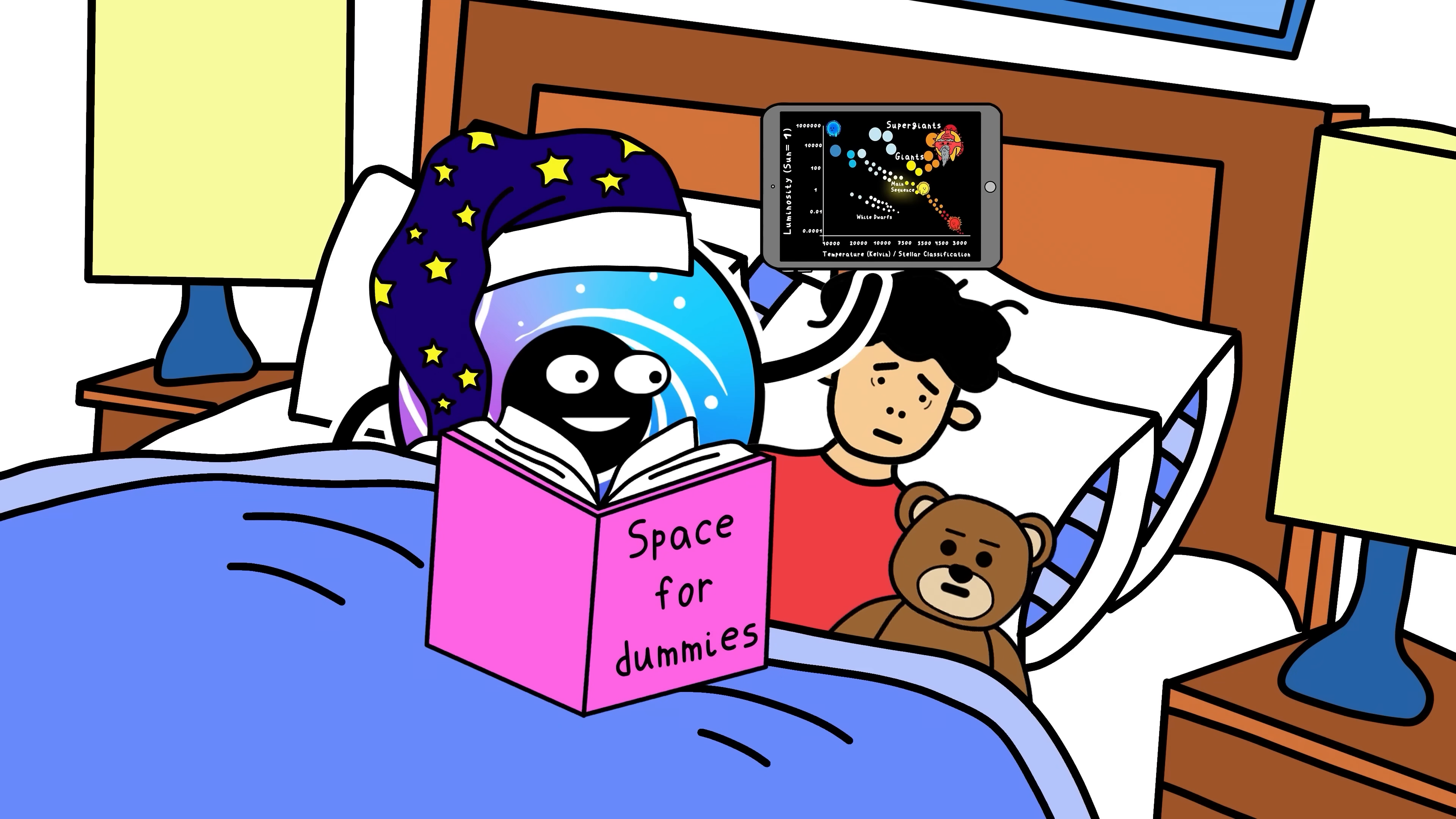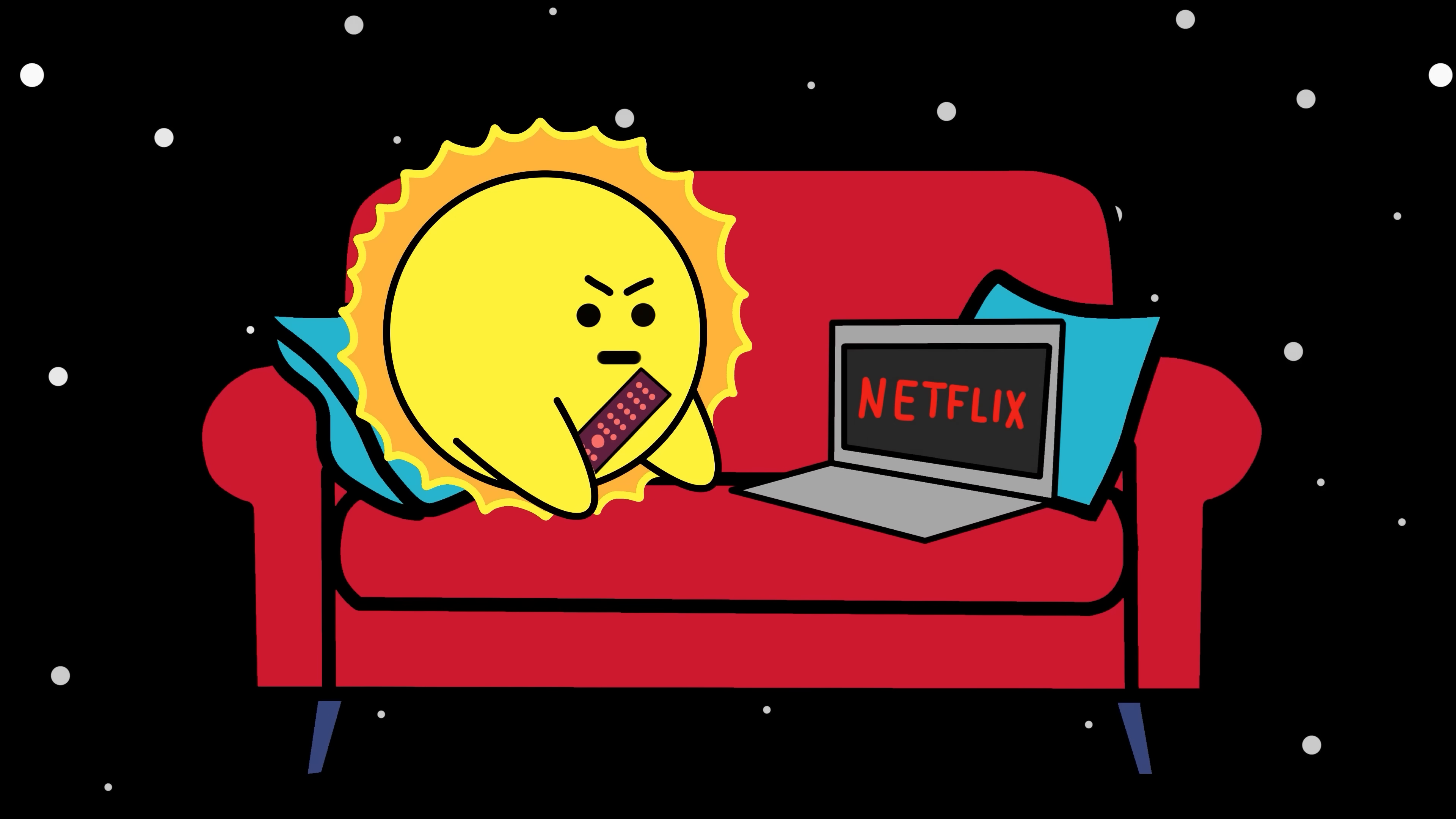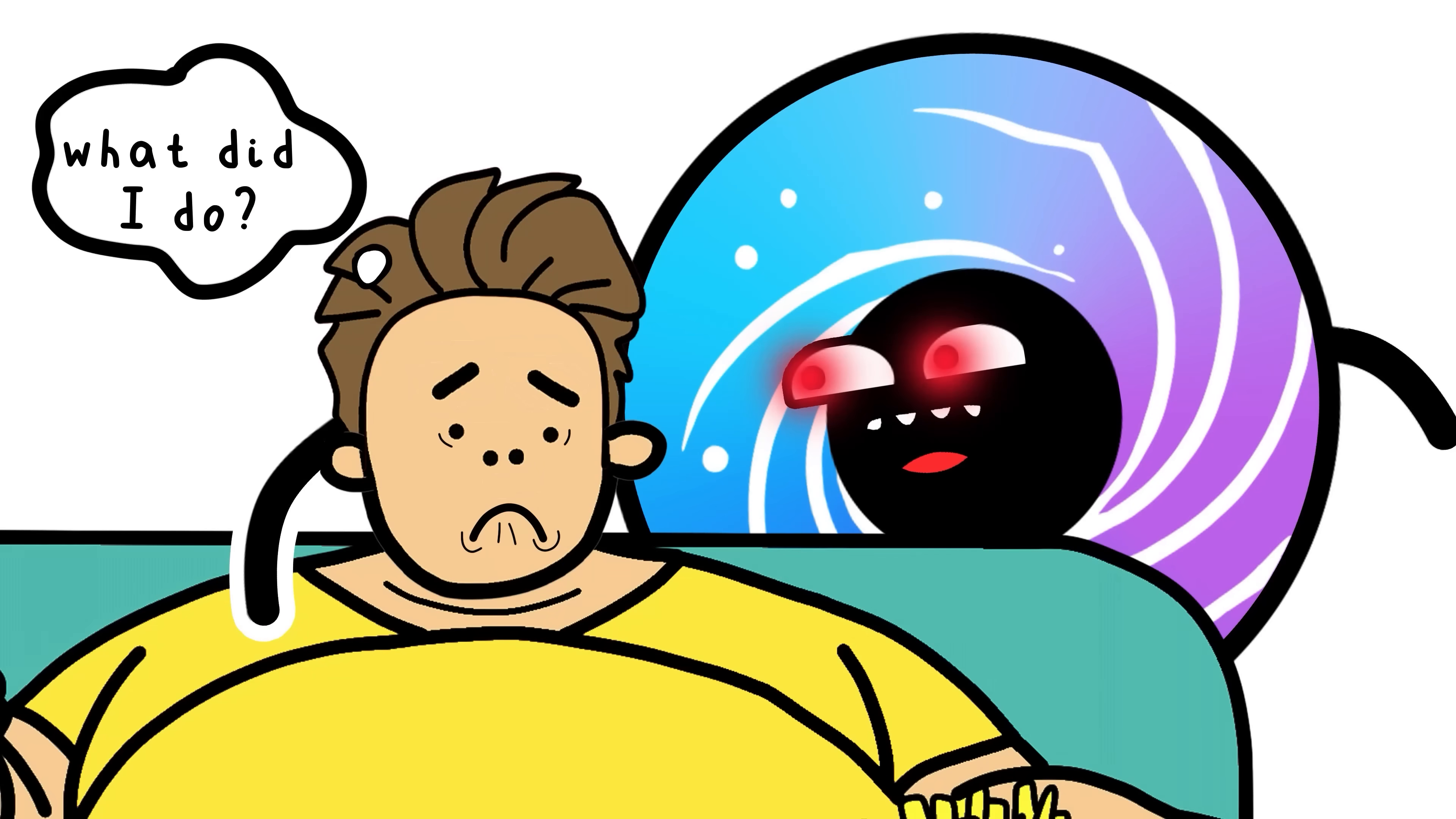Now almost every star in the universe can be plotted on this simple diagram. Temperature on the bottom, brightness on the left. Massive blue stars are right up here. They have short lives and burn themselves out in millions of years. Yellow stars like our sun, middle of the road. 10 billion years of mediocrity. Then way down here on the right, red dwarves. Tiny, cool, and not the brightest. Just like you, Timmy. I know you're watching, and I know you failed your grades last year, so pay attention.